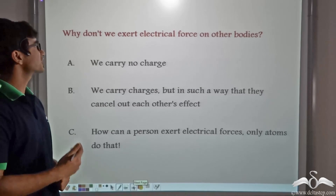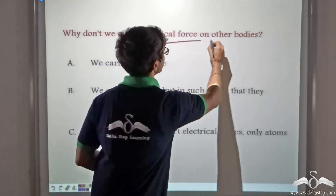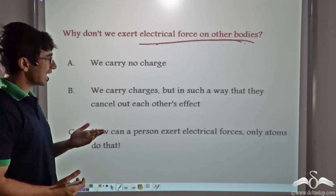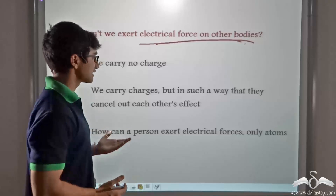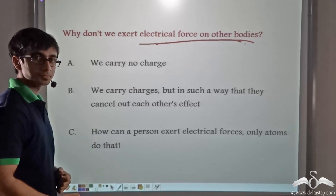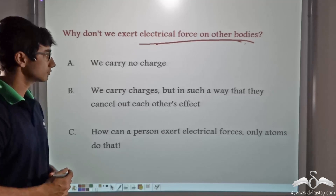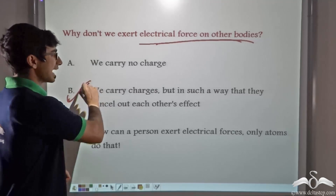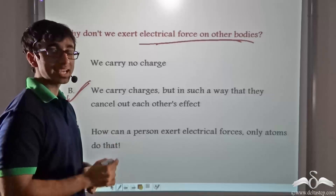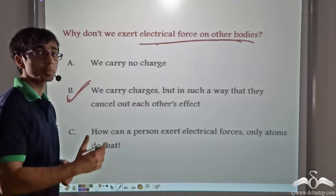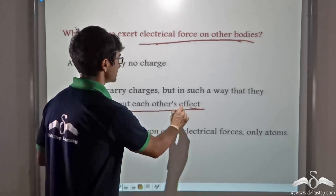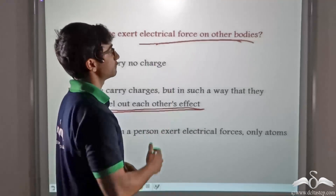Now a question: why don't human beings exert electrical force on other bodies? The options are: it is because we carry no charge; we carry charges but in such a way that they cancel out each other's effect; or only atoms do that. The correct answer is: we carry charges but in such a way that they cancel out each other's effect. Every being and every object on this planet has charges associated with it, but the charges cancel out each other's effect, which is why we don't normally exert electrical force on other bodies.